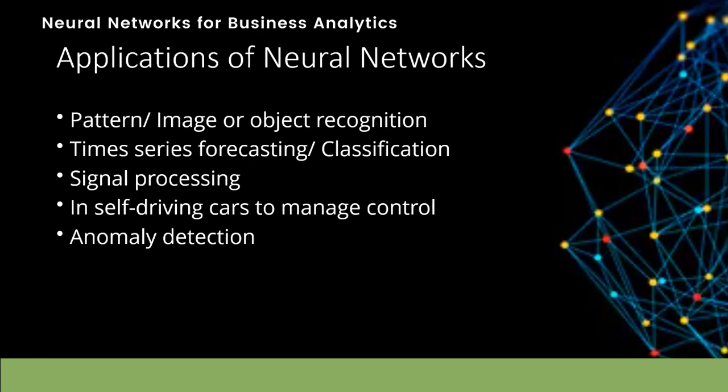Neural networks are typically used to derive meaning from complex and non-linear data, and to detect and extract patterns which cannot be noticed by the human brain. Some standard applications include pattern and image or object recognition, time series forecasting or classification, signal processing in self-driving cars to manage control, and anomaly detection.